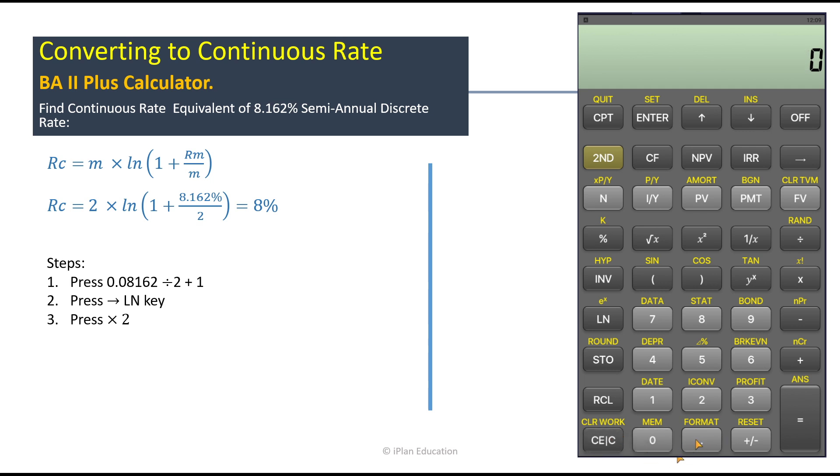Then press 0.08162. Okay, so this is the discrete interest rate. Now you divide this thing with 2. Okay, now you add 1 here.